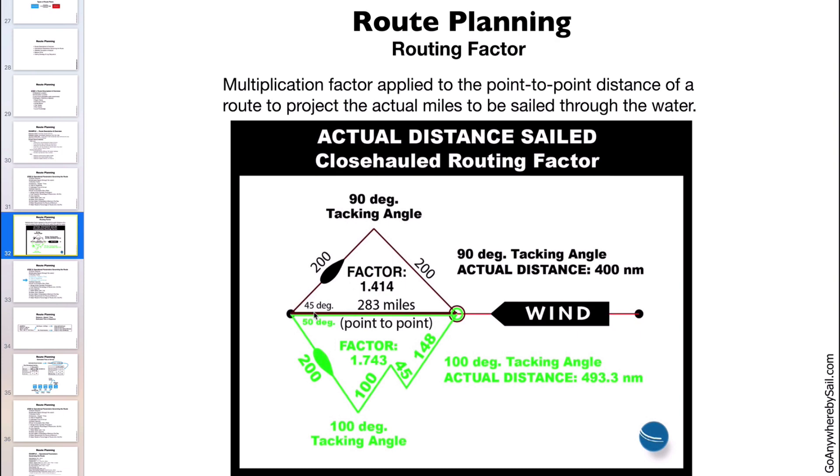The other option is if you can sail 45 degrees off the wind and have a tacking angle of 90. Your 90 degree tacking angle means the actual distance you're going to sail through the water is 400 nautical miles. It's actually 93 miles less with a five degree difference.